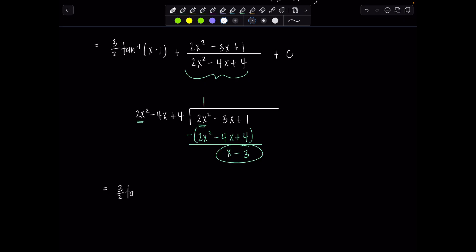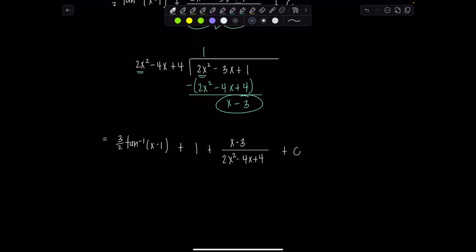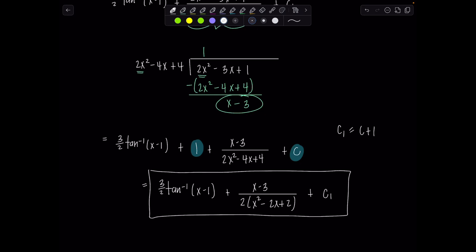So keep that 3 halves, tan inverse, x minus 1. And then plus, now it becomes 1 plus the remainder over the divisor. And then you have plus c. So then this is where it just all comes together so beautifully. The 1 and the plus c can be a new constant. So we'll just say c1 is c plus 1. And at long last, you guys, this is going to be the answer. We'll box. I know you've been waiting for it. Plus x minus 3 over, let me take the 2 out. Just class it up. 2 times x squared minus 2x plus 2 plus c1. Voila. Box it with pride. That was well deserved.